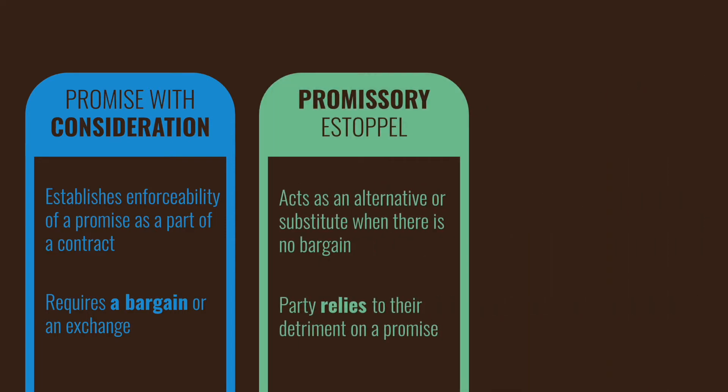In the previous lesson, we looked at promissory estoppel. Just like restitution, it is a consideration substitute. So in the absence of consideration, where we have a promise that ends up being gratuitous for any number of reasons — but primarily that it would be without consideration — a fallback argument would be promissory estoppel. And promissory estoppel is based on the promisee's detrimental reliance on that promise.